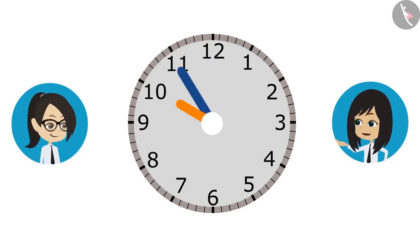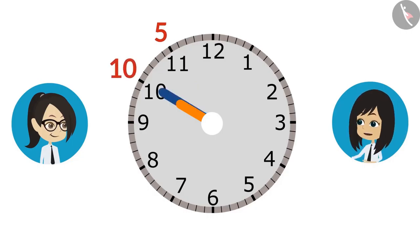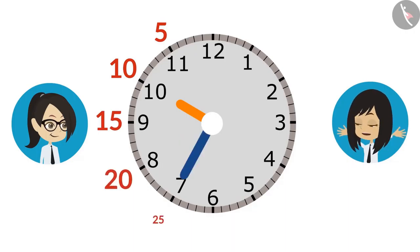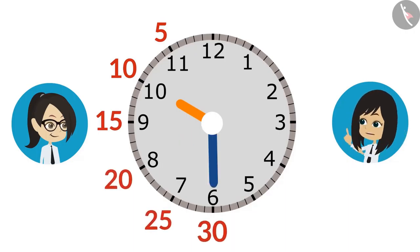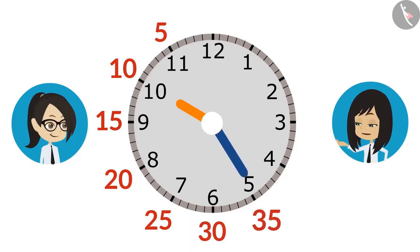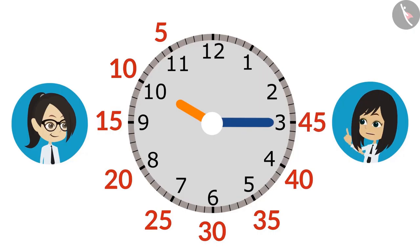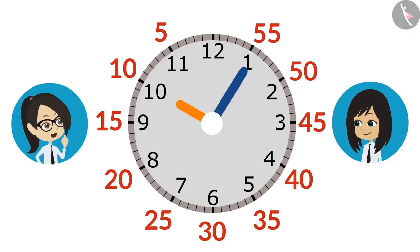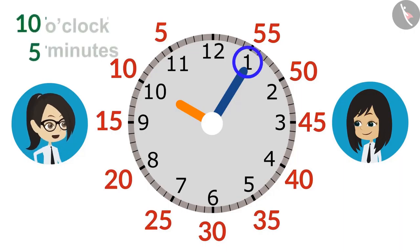5 minutes when moved from 12 to 11. 10 minutes from 11 to 10. 15 minutes at 9. 20 at 8. 25 at 7. 30 at 6. 35 at 5. 40 at 4. 45 at 3. 50 at 2. And it will be 55 minutes at 1. This means the minute hand will be at 1 when it is 55 minutes before 10 o'clock. So we have to leave the hotel at 5 minutes past 10 o'clock.